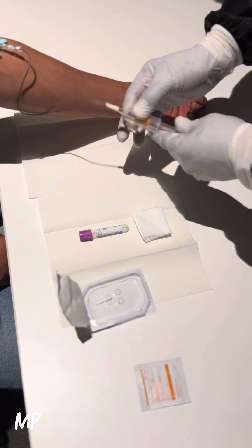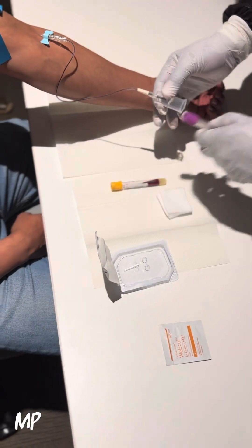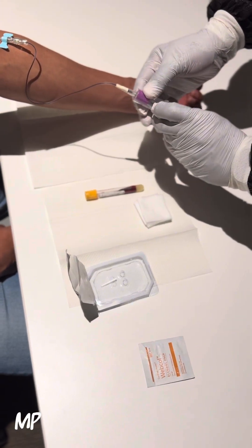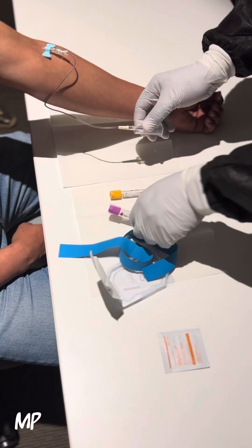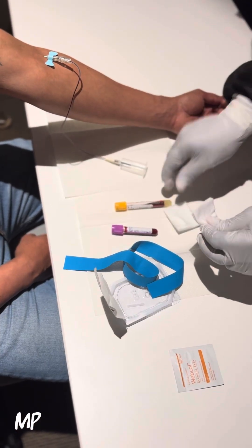We won't take too much. Multiple draw. Release the tourniquet, twist and pull off the tube, place down your vacutainer holder.